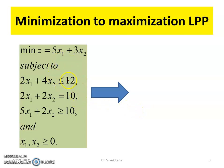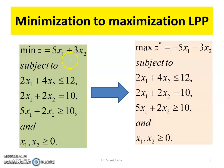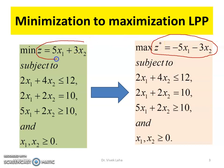Let us start with a minimization problem. We can convert this minimization problem into a maximization problem by changing the sign of the coefficients in the objective function. The objective function for the minimization problem was Z = 5x₁ + 3x₂. For the maximization problem it becomes −5x₁ − 3x₂.